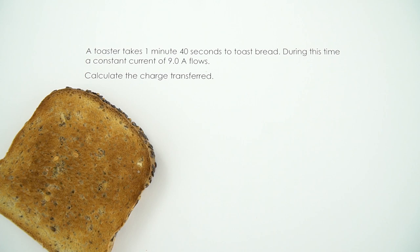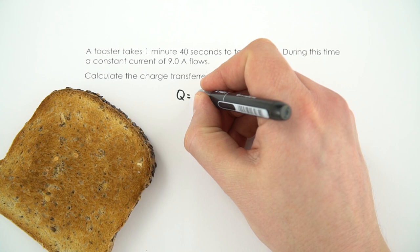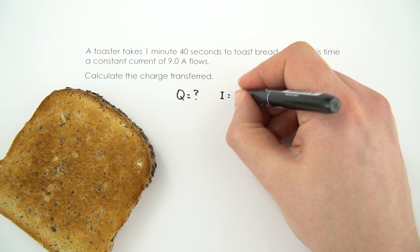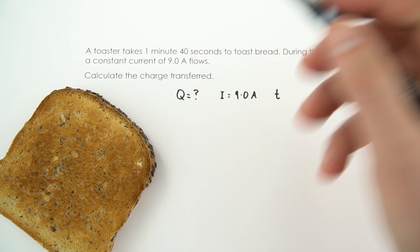So to do this what we're not sure about is the charge transferred Q, so that's our unknown. But we do know the current I, which is 9.0 amps, and the time it says up here is 1 minute 40 seconds.